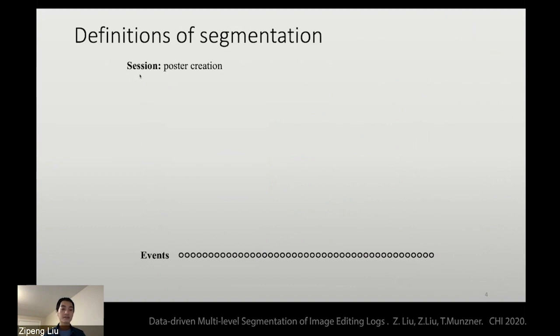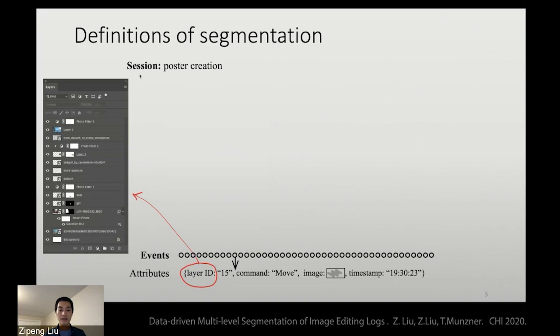So let's define the segmentation problem. Suppose you have a sequence of events in a poster creation session. And each event is associated with a bunch of attributes, like command name, the image content, the timestamp, and the current active layer, which is the current visual object you are operating on.